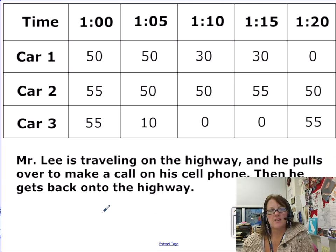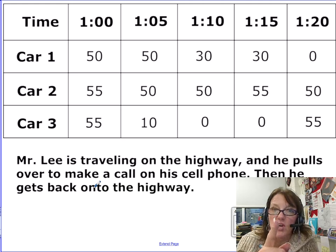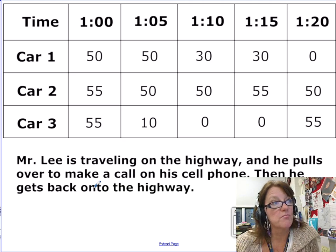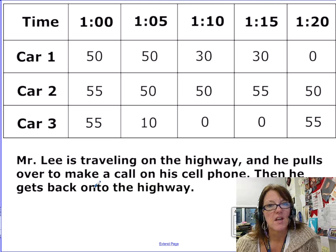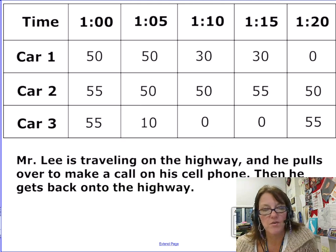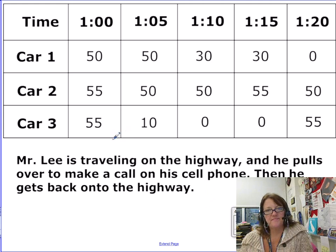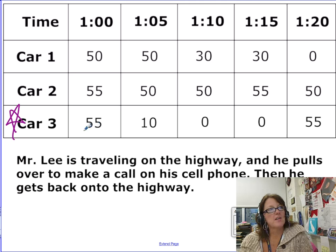So our job is to take a look at some situations and see which one matches. Here's Mr. Lee. Mr. Lee happens to be traveling on the highway, and then he's being very smart, not like most of the drivers I see. He actually pulls off of the highway, pulls over, and then makes the call on his cell phone. Then he gets back on the highway. Smart man. Which one of these cars fits this situation? He's traveling, he pulls off, stops, makes the phone call, and then resumes traveling again. You should pick ding, ding, ding, car number three. We're traveling, we slow down, stop, stop, that's when he's making the phone call, and then he's traveling again.